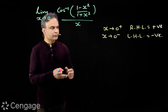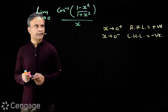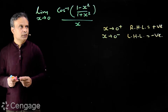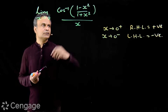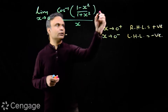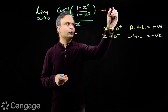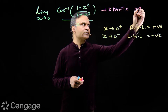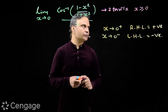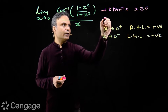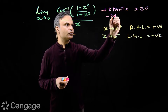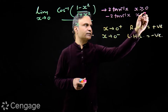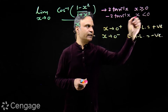Let us find the values of RHL and LHL. We have a direct formula: cos⁻¹((1 - x²)/(1 + x²)) equals 2 tan⁻¹x for x greater than or equal to zero, and equals minus 2 tan⁻¹x when x is less than zero.